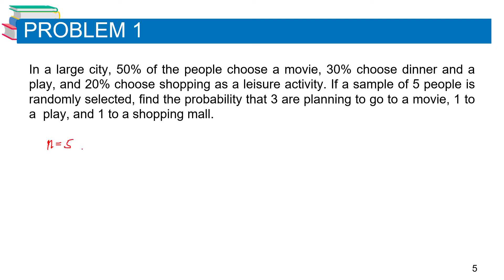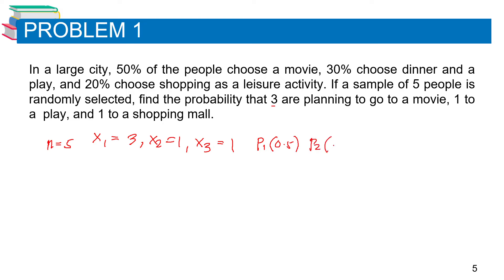For this problem, n equals 5, x₁ equals 3, x₂ equals 1, and x₃ equals 1. The probabilities are: p₁ equals 0.5, p₂ equals 0.30, and p₃ equals 0.20.